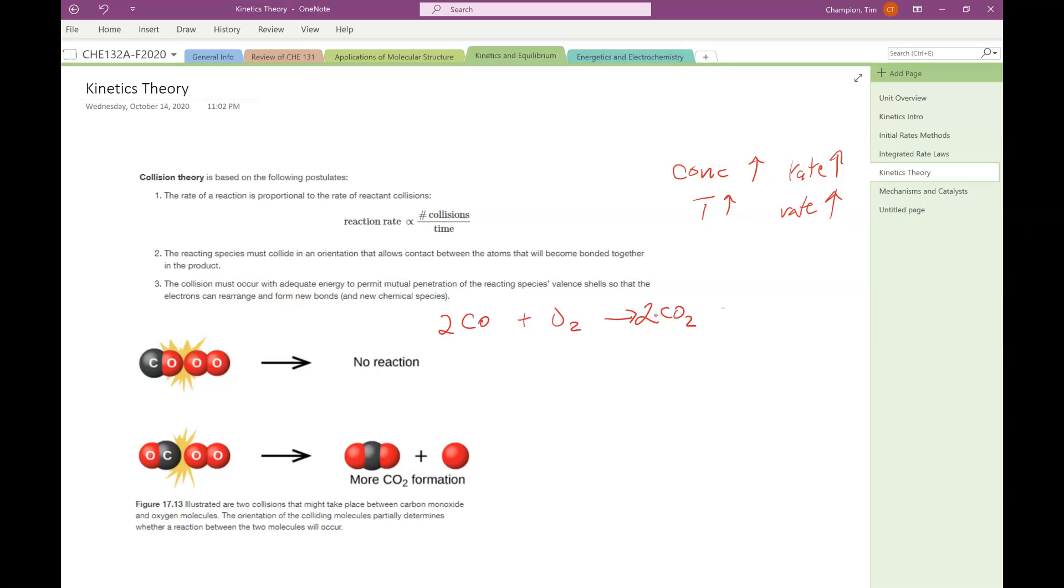It's going to start with a carbon monoxide and oxygen colliding. In the top reaction, if the carbon monoxide and oxygen collide where the oxygens are touching, that's likely to lead to no reaction. But if the oxygen collides with the carbon, you can have a transfer of oxygen to the carbon monoxide and get CO2. That's an illustration of the orientation factor—the collision's got to be oriented in the proper way.